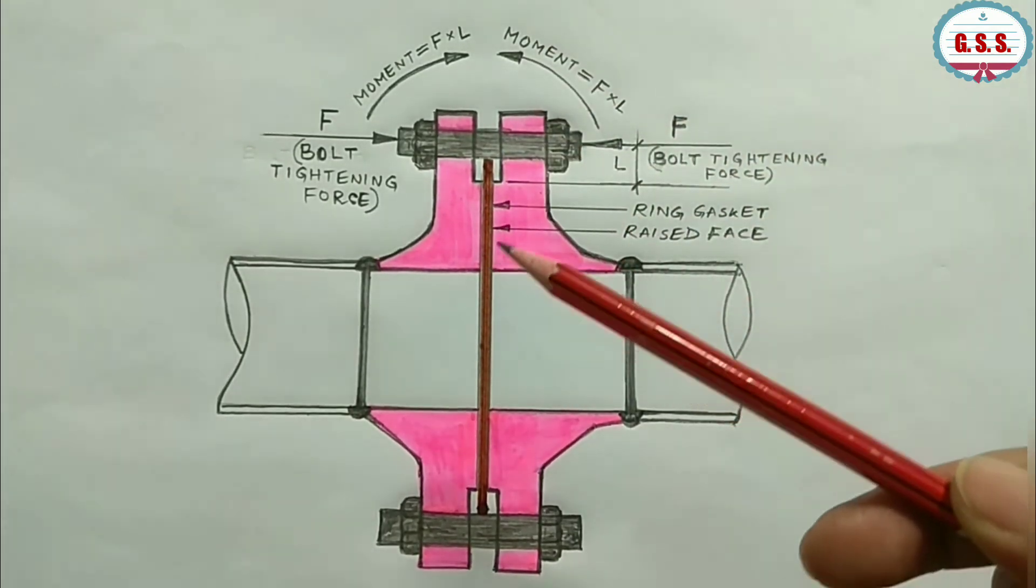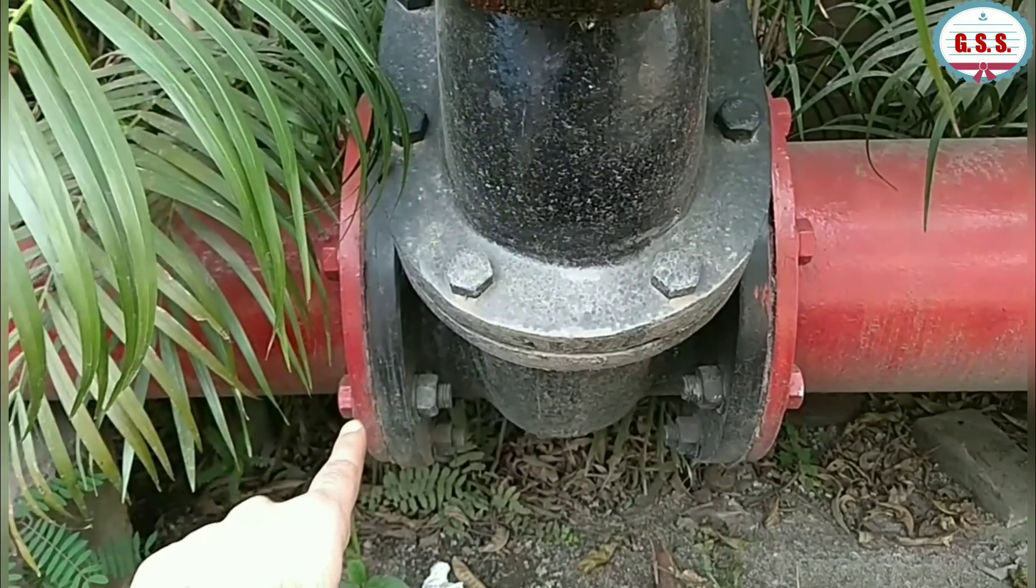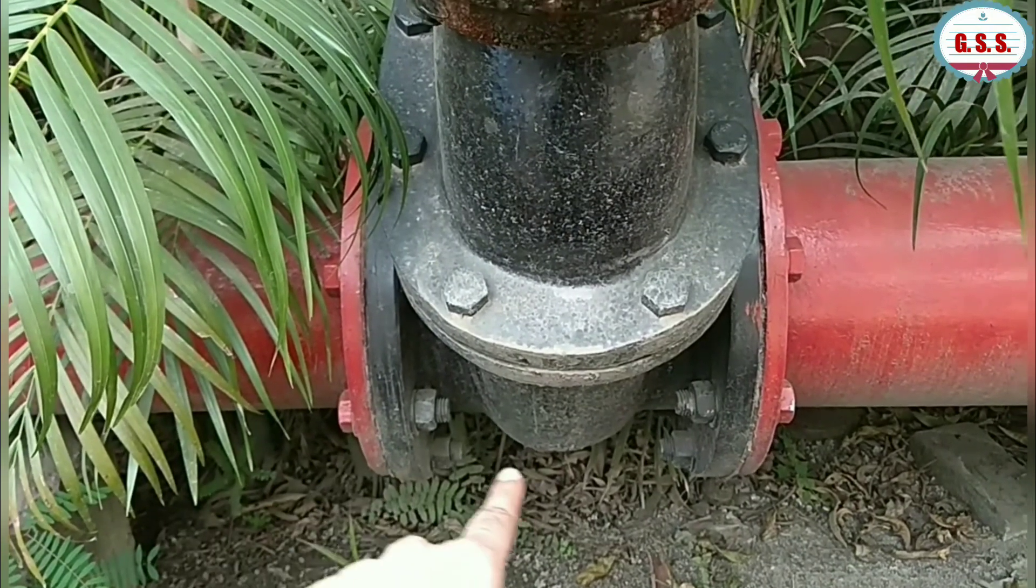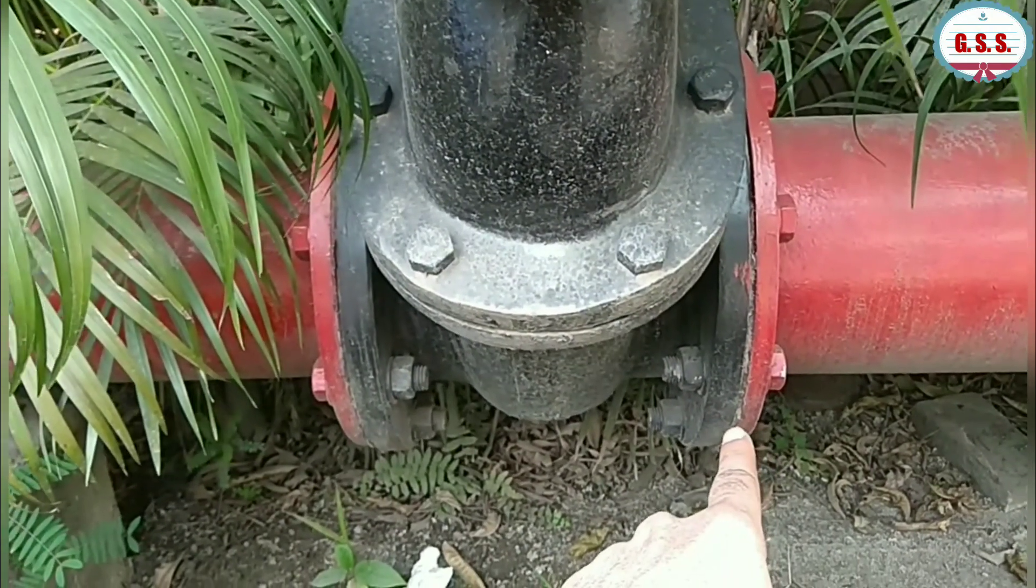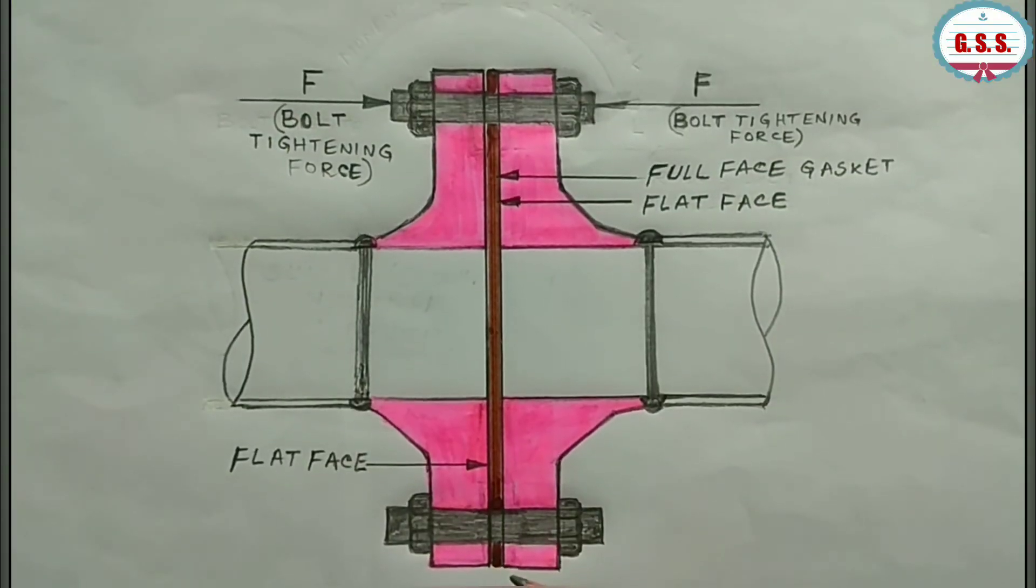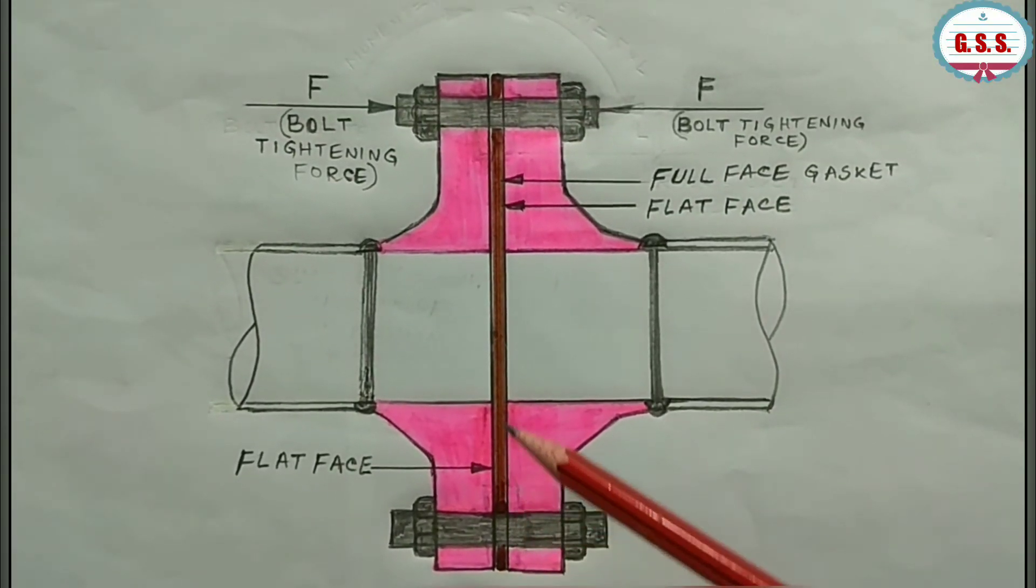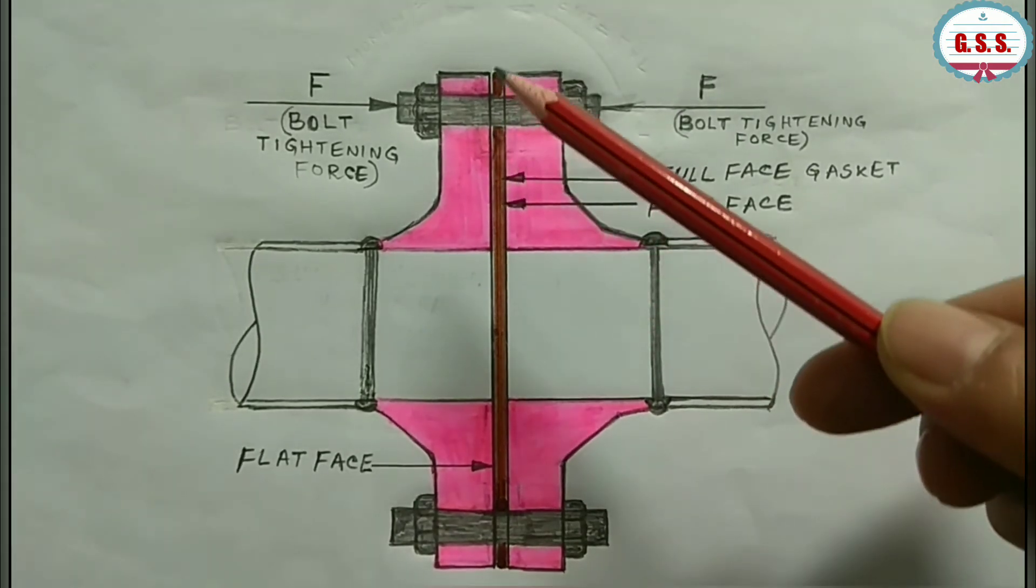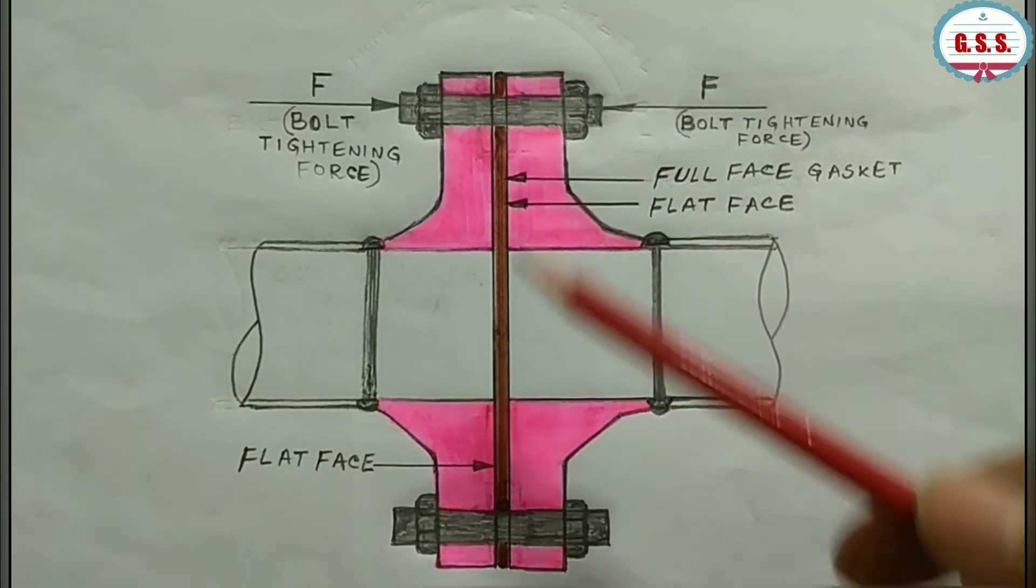You can see an installation of flat face flange with full face gasket used for a cast iron valve. Flat face flange has a gasket seating surface in the entire plane of the flange, through the bolt holes up to the flange outer diameter.